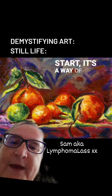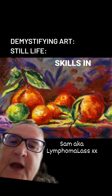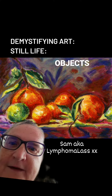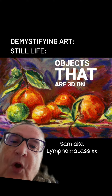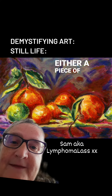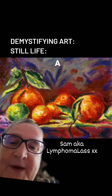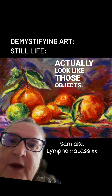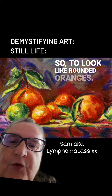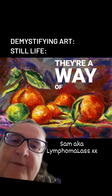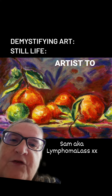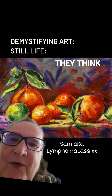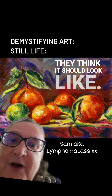Well, for a start, it's a way of developing skills in representing physical objects that are 3D on a 2D plane, either a piece of canvas or a piece of paper, and making them actually look like those objects — so look like rounded oranges. They're a way of training the artist to see what is actually there, rather than painting what they think it should look like.